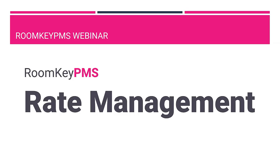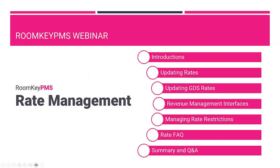Getting started, take a look at an outline for today's presentation. We'll start with some introductions, then we'll jump right into how to update rates when they're connected to a GDS connectivity partner. We'll talk about rate management interfaces that connect with Roomkey and we'll also look at managing rate restrictions. Then we have a few frequently asked questions related to rates and rate management with Roomkey, followed by a summary and Q&A at the end.